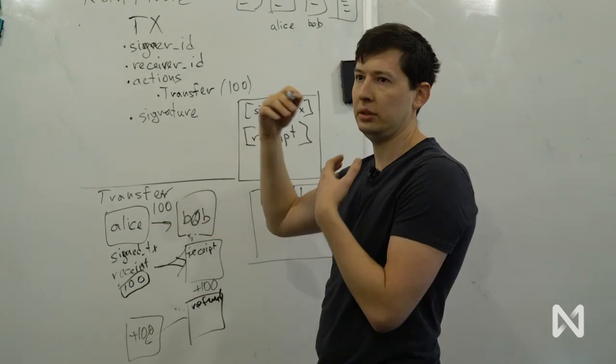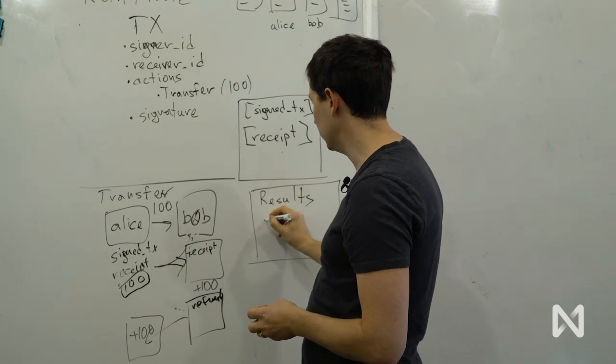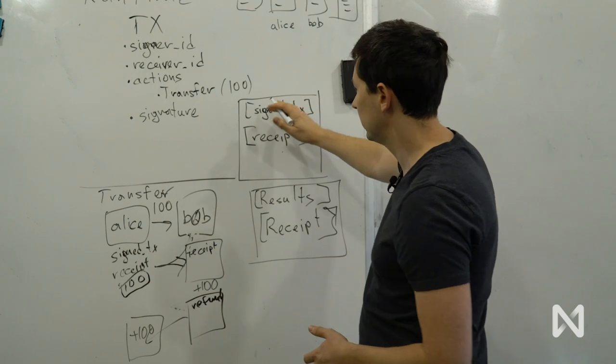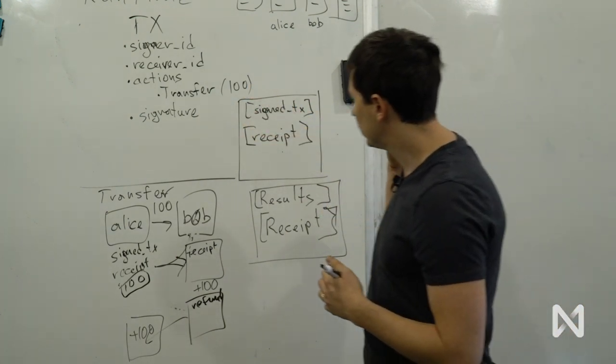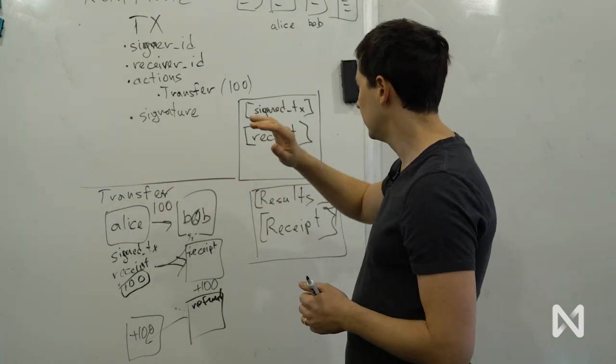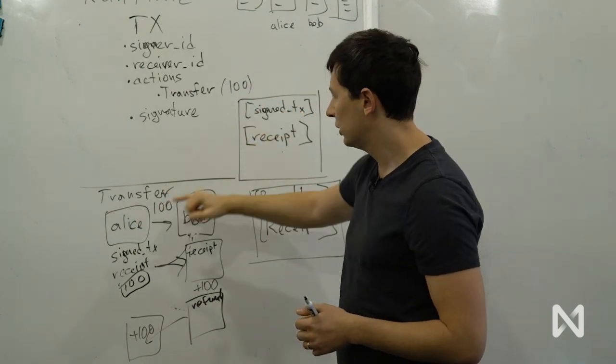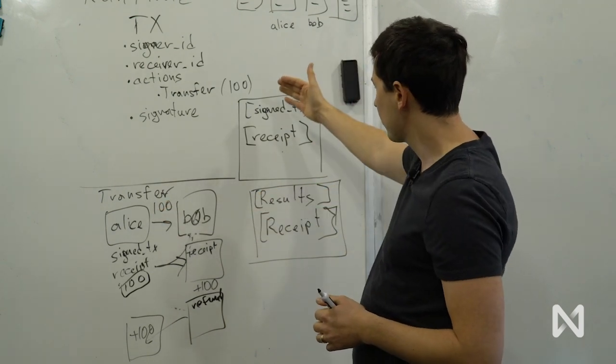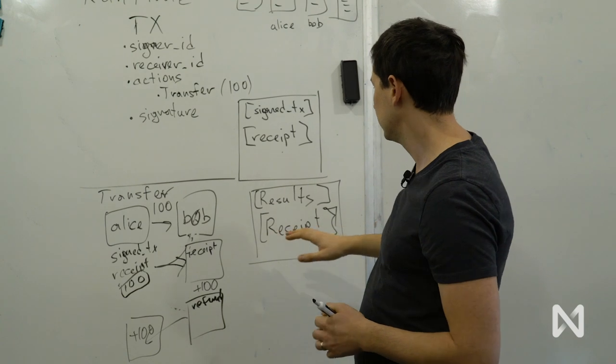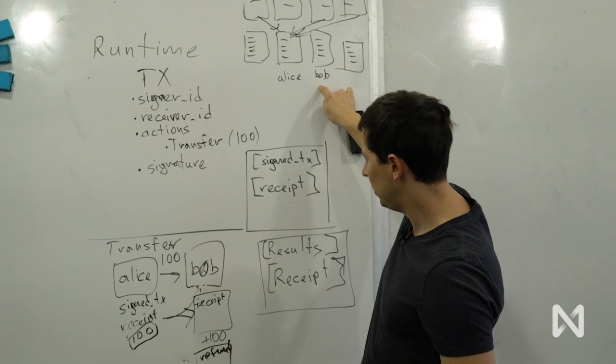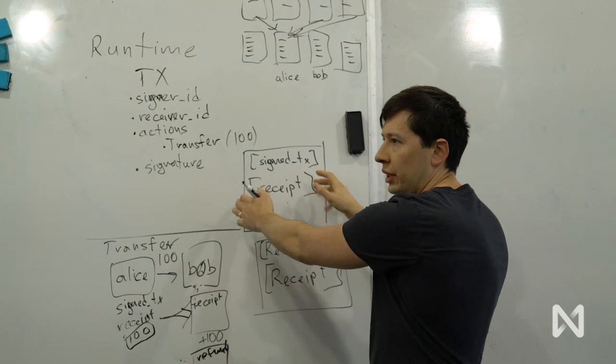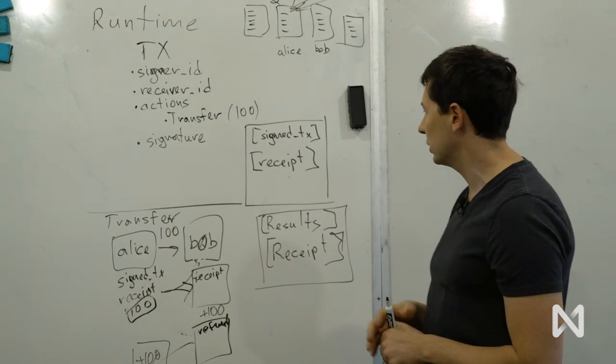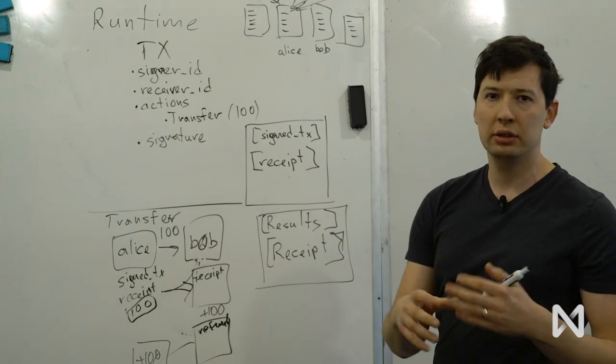So what runtime does, it takes this input and produces the output, which is results. This is what happened when we executed some receipts and maybe local transactions. If, for example, Alice does something on her own account. And also outgoing receipts. This is a new receipt that was generated by this process. So in this case, transfer is going to be Alice. It's a signed transaction. It will take tokens out of Alice's account. So it's going to modify the Alice account by removing the 100 tokens. Generate a new outgoing receipt that contains these 100 tokens that will go to the shard of Bob. Bob will receive this receipt and apply it and process it and generate the result and increase the balance of Bob account by 100 tokens. So this is how it works on a high level. And next time we'll talk about function calls and contracts. Thank you.